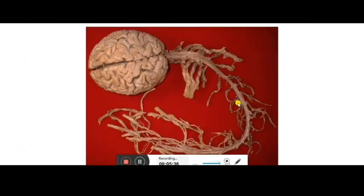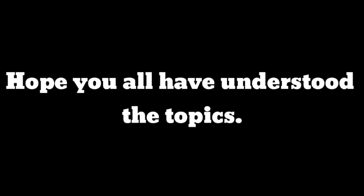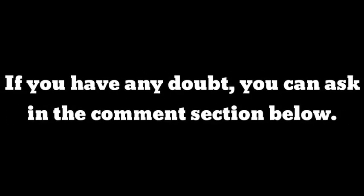Here you can see the nervous system: the brain, spinal cord, and nerves coming out — all made up of neurons. Their function is to take stimuli from the environment and transmit them to the brain and spinal cord as nerve impulses, and accordingly you react. I hope you have all understood the topics. If you have any doubt, ask in the comment section. Please like, share, subscribe, and hit the bell icon. Thank you.